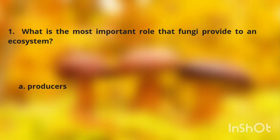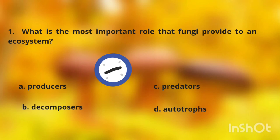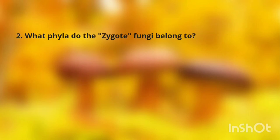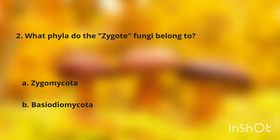Question one options: A. Producers, B. Decomposers, C. Predators, D. Autotrophs. Question two: what phyla do the zygote fungi belong to? A. Zygomycota, B. Basidiomycota, C. Deuteromycota, D. Ascomycota.